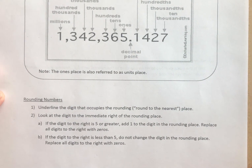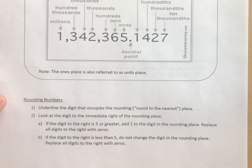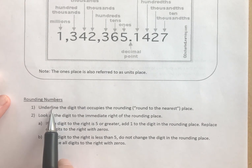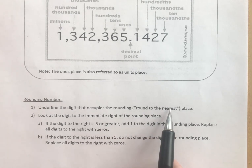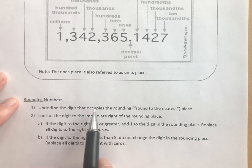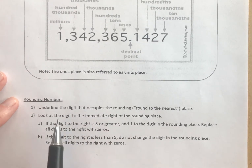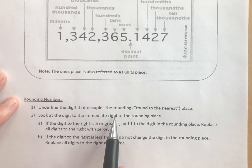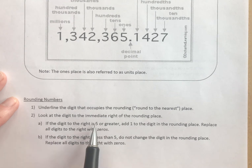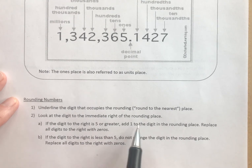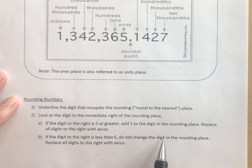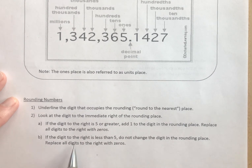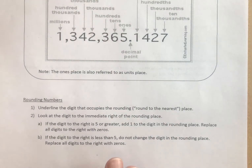So how do we round numbers? Here's the procedure. You begin by underlining the digit that occupies the rounding place — for example, if you're told to round to the nearest thousand, underline the digit in the thousands place. Then look at the digit to the immediate right of that rounding place. If the digit to the right is five or greater, add one to the digit in the rounding place and replace all digits to the right with zeros. If the digit to the right is less than five, do not change the digit in the rounding place, and again replace all digits to the right with zeros.